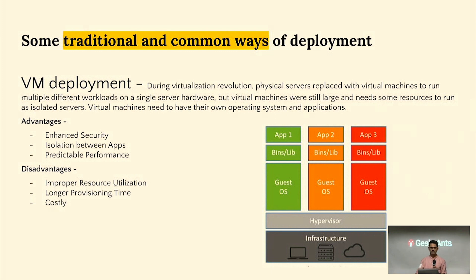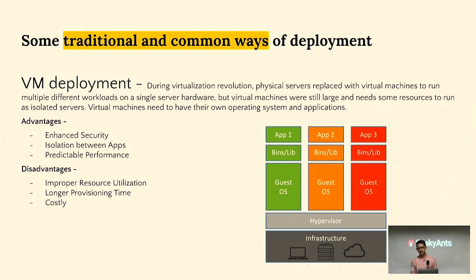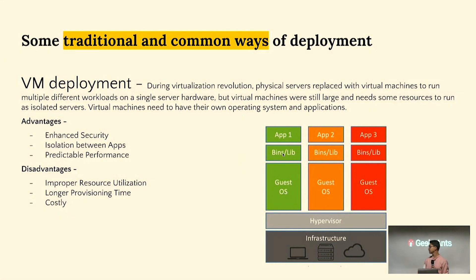VM deployment comes with advantages: enhanced security due to isolation between apps, and predictable performance. However, there are disadvantages — improper resource utilization, for example. If App 3 is not using all the resources assigned to it, those resources can't be transferred to App 1 if it needs more. And because a guest OS is present for each VM, we see longer provisioning times.